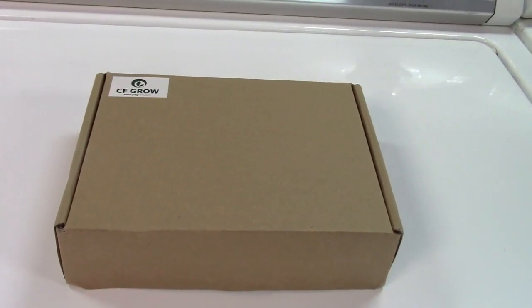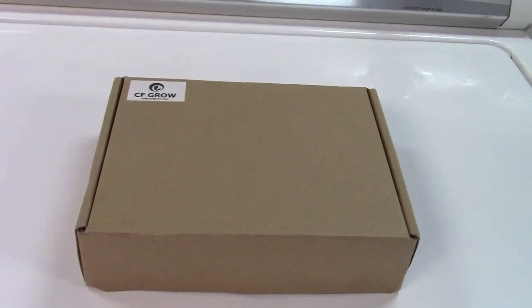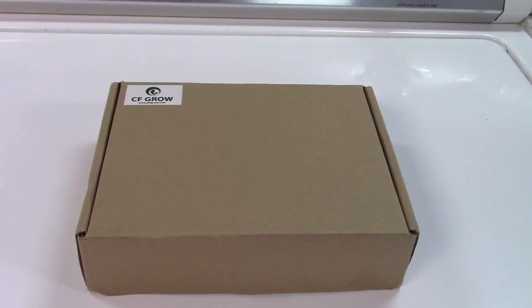This is the CF Grow Under Cabinet or Closet Light Strips. It comes in a two-pack. Let's take it out of the box.